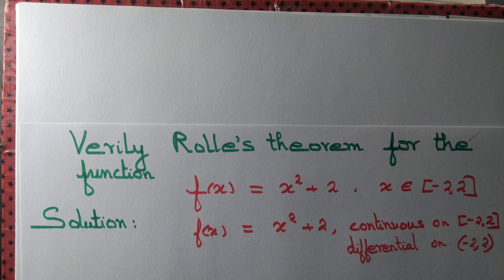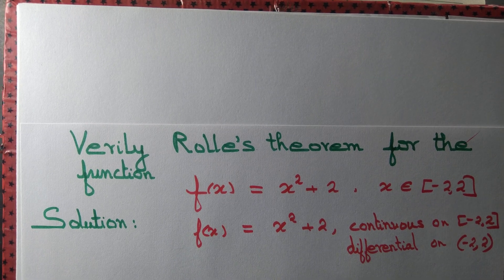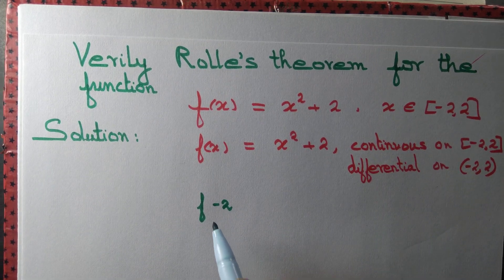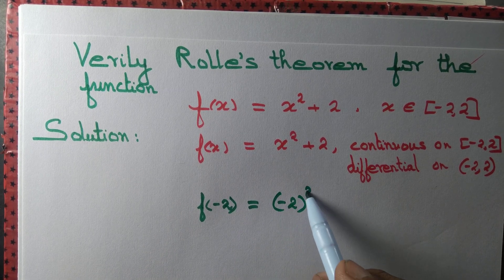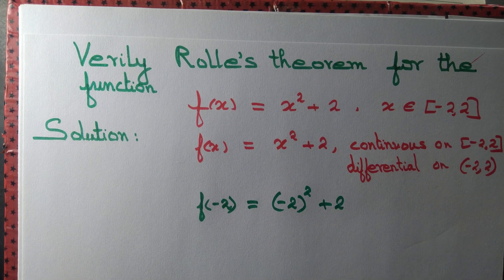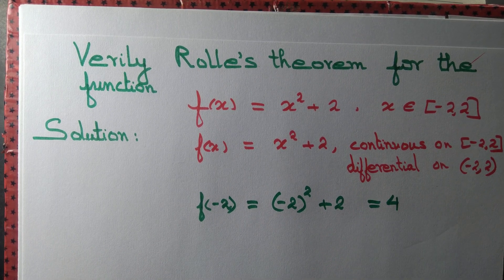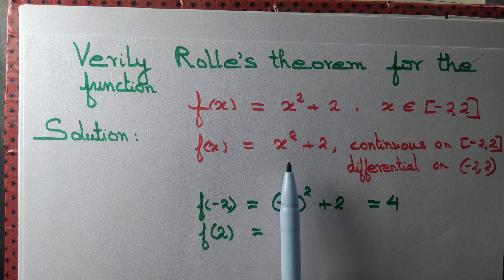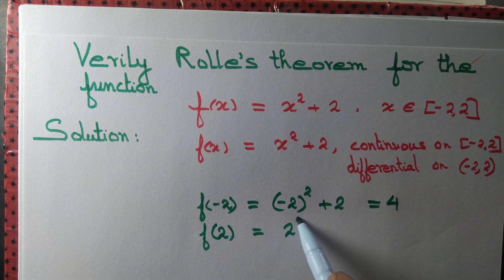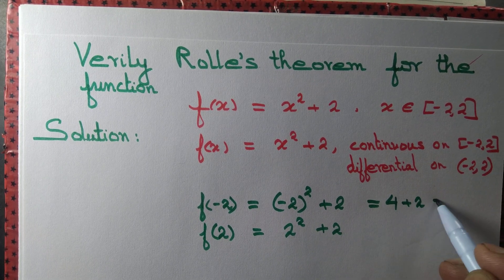Next step, we need to compute the value of the function at the endpoints, which are -2 and 2. What is f(-2)? f(-2) = (-2)² + 2, replacing x by -2, and that is equal to 4 plus 2 equals 6. What about f(2)? Replace x by 2: 2² + 2 = 4 + 2, which is equal to 6.